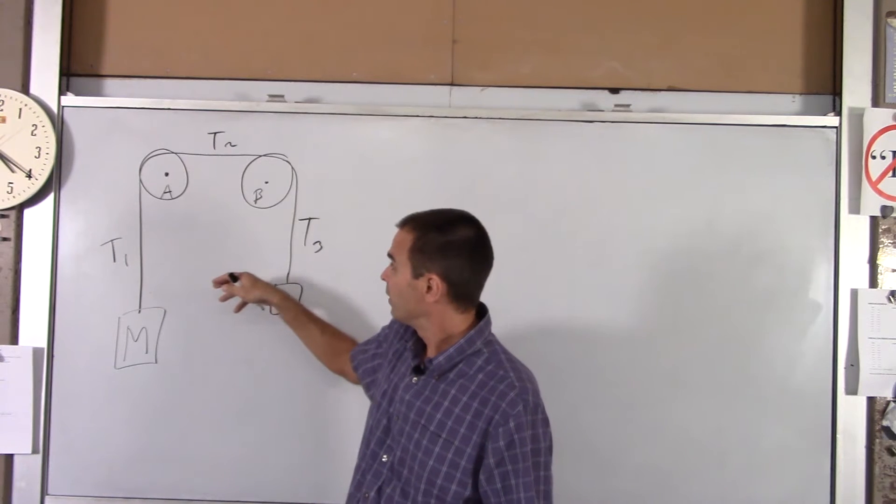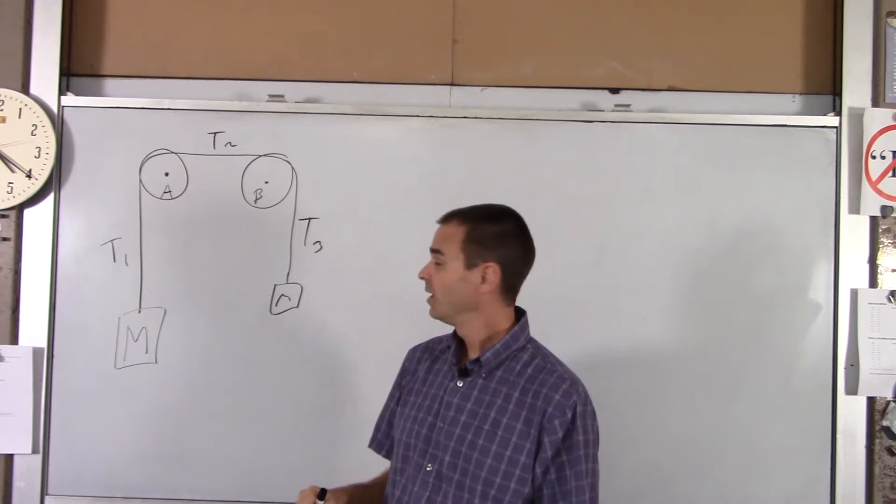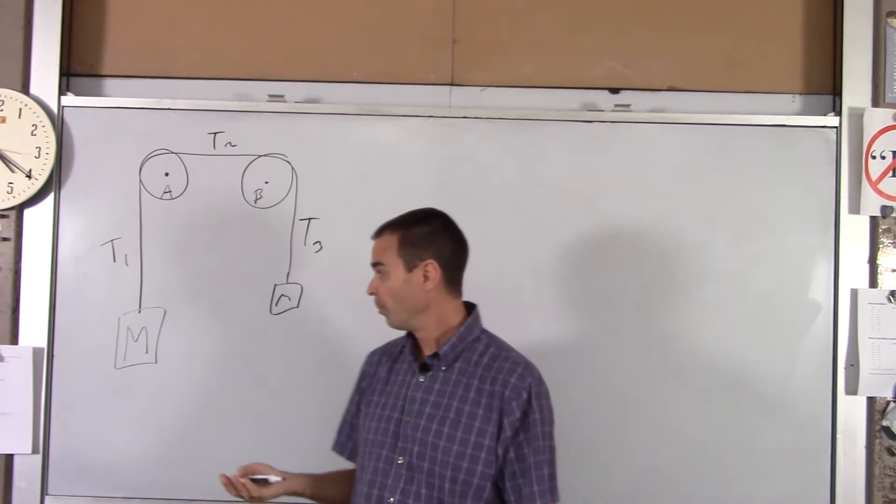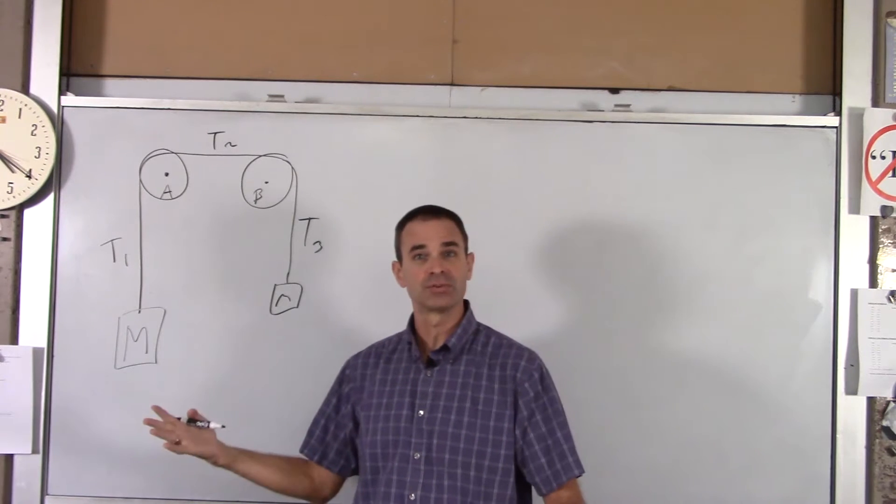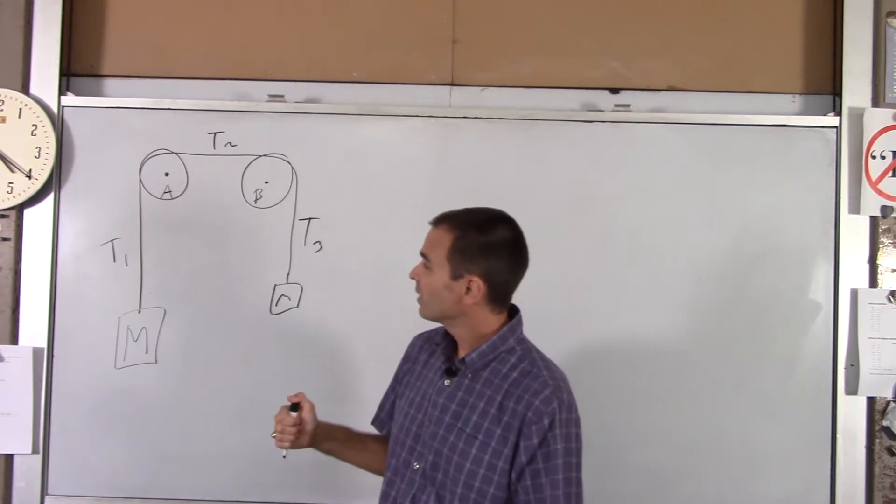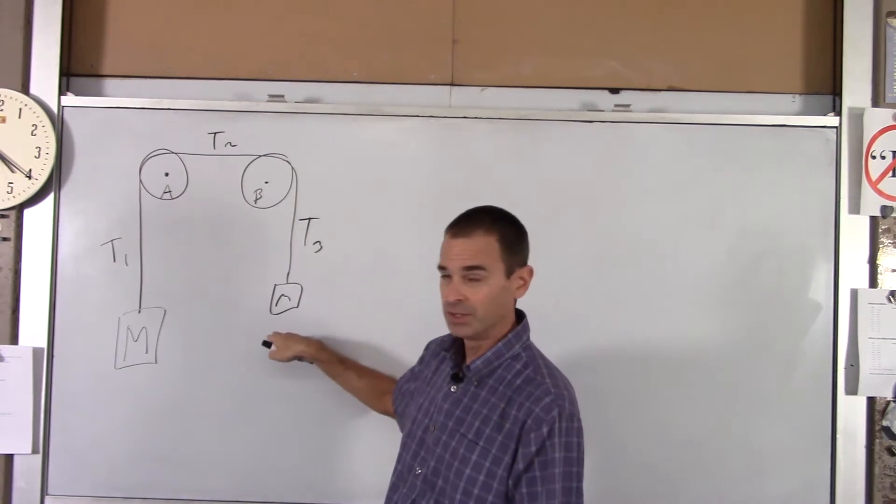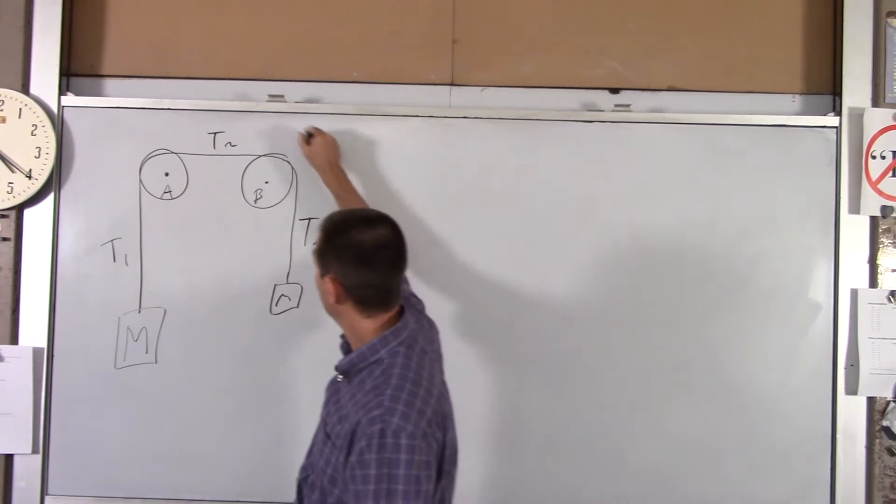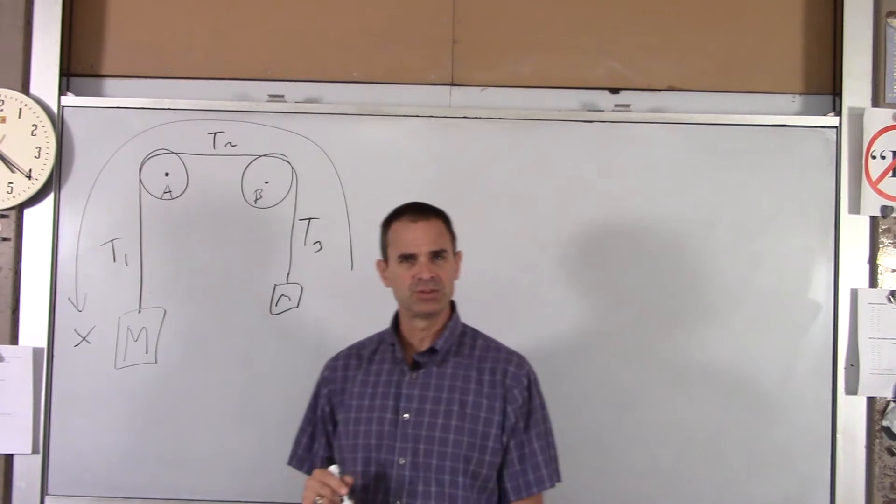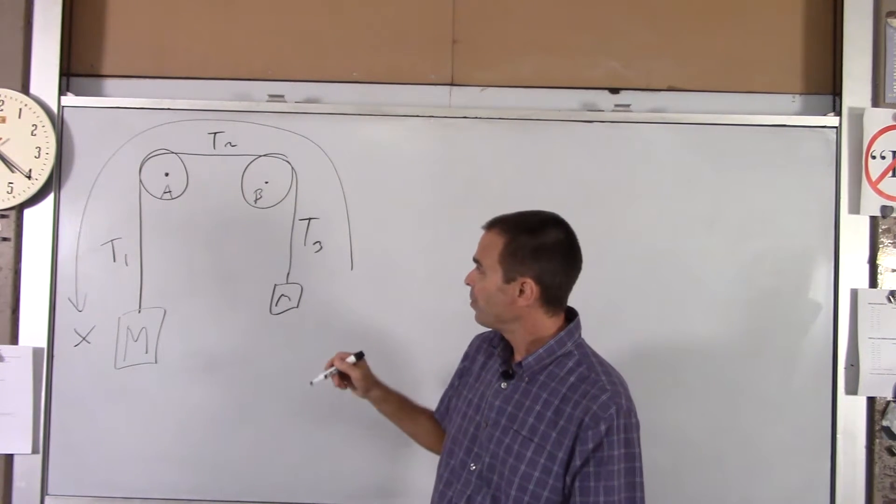First of all, we're going to find the tension in each part of the rope and then the acceleration of our system. Most likely we'll find acceleration first, and then we'll use that to find those tensions. If you look, you can see that if this mass is indeed bigger than this one, then the acceleration of your system will be that way. So we're going to make that the positive direction, counterclockwise.